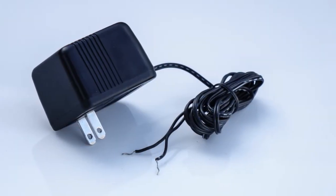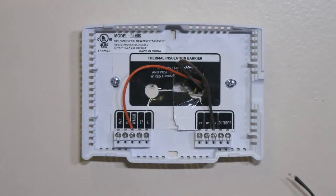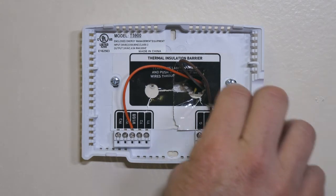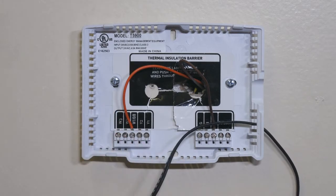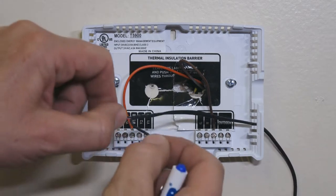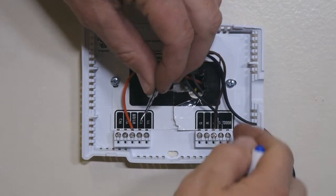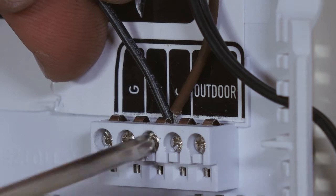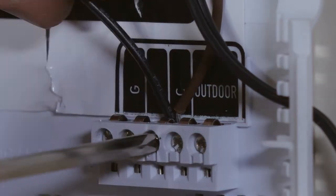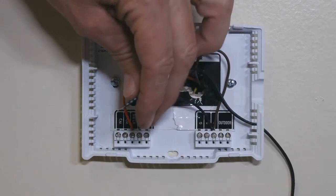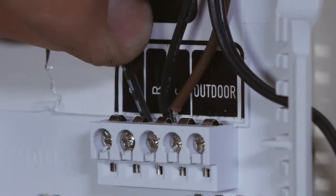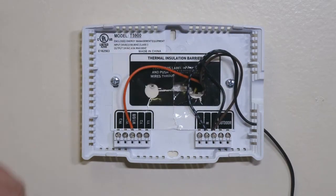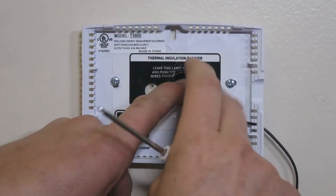Next, you will take the included power supply and thread it through the ventilation spaces on the right-hand side. You will put one end in the common or C terminal and the other end in the R terminal. Then stuff the two wires into the wall.